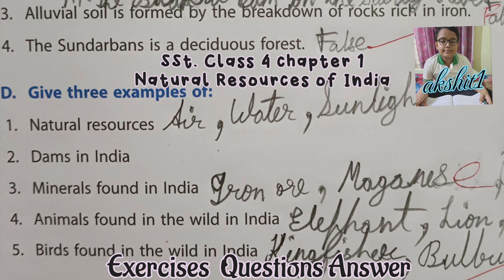Give three examples of: First, natural resources — air, water, sunlight. Second, dams in India — the Indira Sagar and the Sardar Sarovar dams on the Narmada river, and the Nagarjun Sagar dam on the Krishna river. Third, minerals found in India — iron ore, manganese, bauxite.